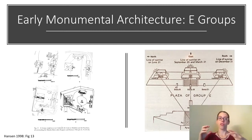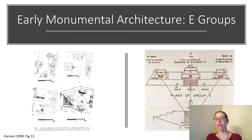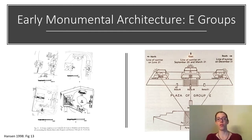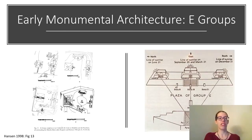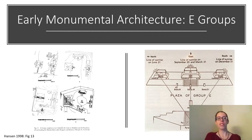E-groups are groups of structures where you have two different buildings — usually one smaller building and then one larger building. You can see on the right-hand side the smaller building and then the longer building with three small buildings on top of it. At least some of these large monumental E-group constructions had astronomical alignments associated with the rising and setting of the sun on the solstice and equinoxes. These types of buildings are found very early in the Maya region, with some variation in what they looked like at different sites, but they all share the same configuration of a smaller building and then the longer building.